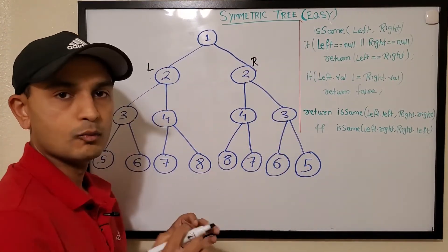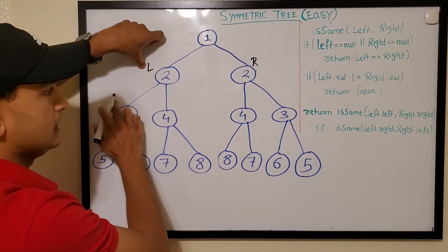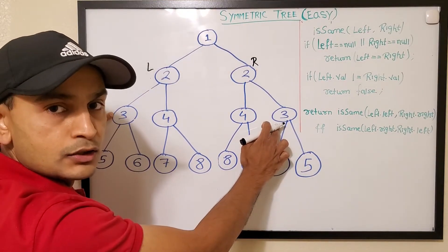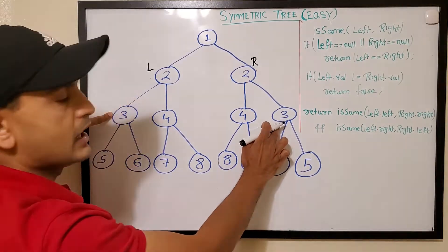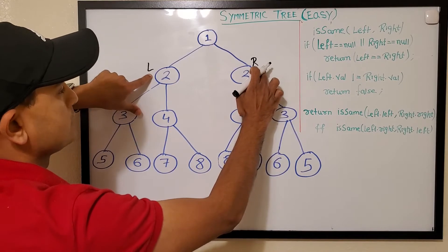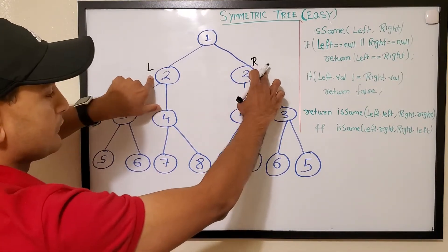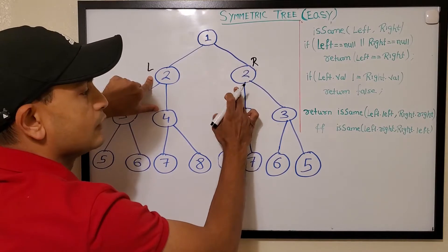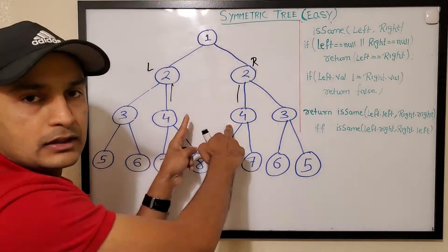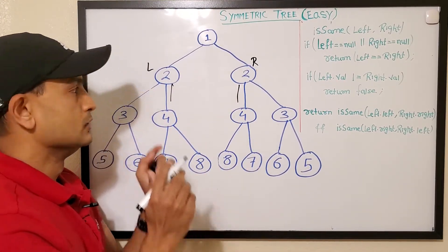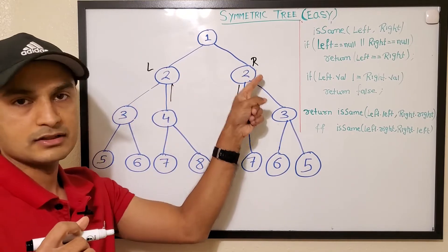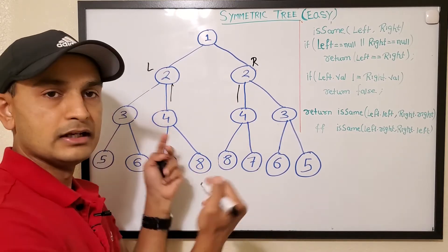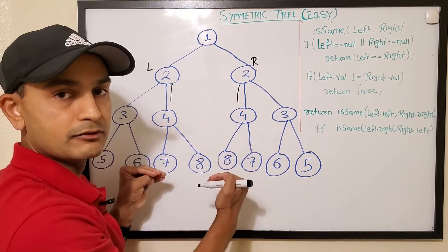Now we have two nodes. To compare the next level, we take the left node's left child and the right node's right child — we compare whether the nodes are null and whether the values are the same. Then we also compare left child's right node and right child's left node. So we are doing these two comparisons.